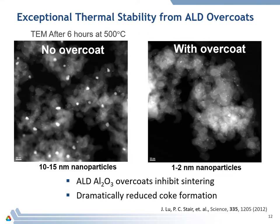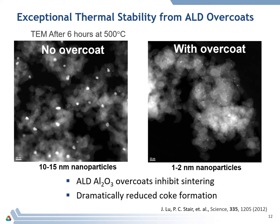We also greatly improved the thermal stability — that was the whole motivation for doing this overcoating. This improved stability is shown in a pair of TEM images. On the left, the palladium nanoparticle catalyst without the overcoat, after heating to 500°C for six hours, shows very obvious white spots of 10 to 15 nanometer particles — they have sintered tremendously. In contrast, on the right-hand side, the nanoparticles have maintained their one to two nanometer size. The ALD aluminum oxide not only reduces coke formation but also inhibits sintering.